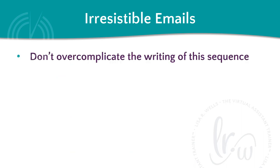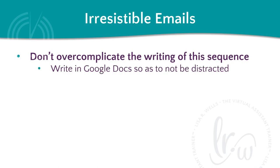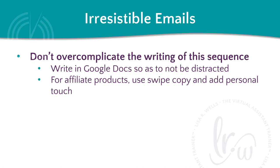Don't overcomplicate the writing of this email sequence. Write your emails in Google Docs so that you can focus strictly on the wording instead of being distracted with formatting or not saving your work frequently enough. If you're promoting an affiliate product, use the affiliate swipe copy provided to you and add your own personal touch. Once your copy is finalized, it's a simple cut and paste into your email platform. Use an email template to keep your formatting consistent with every email.